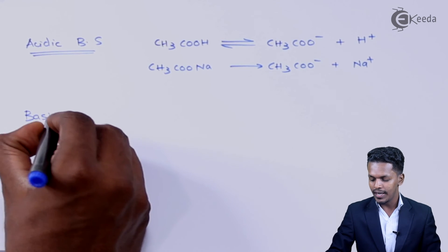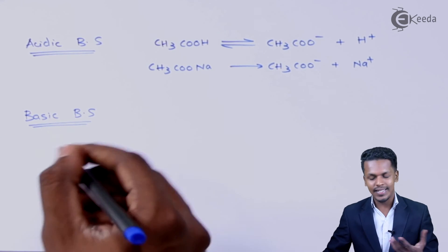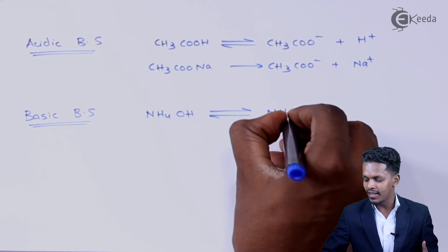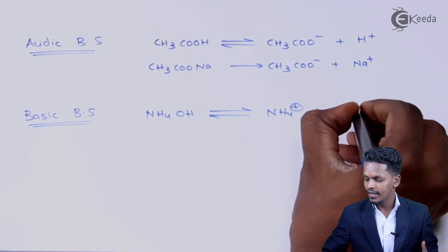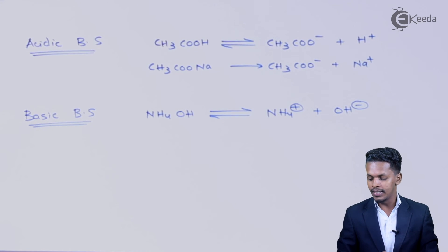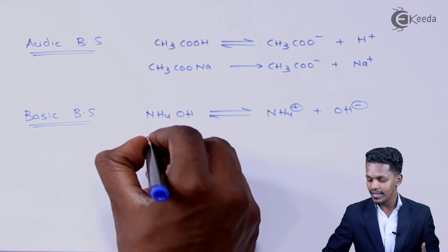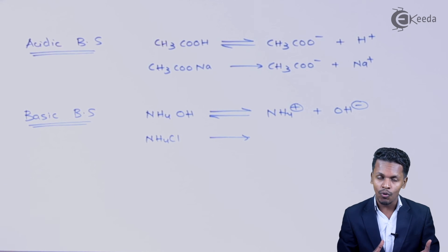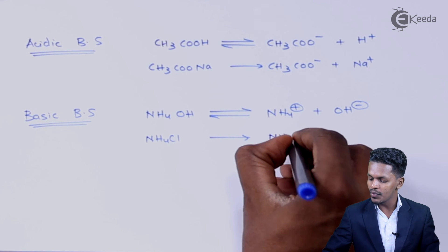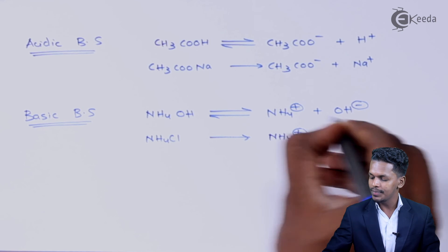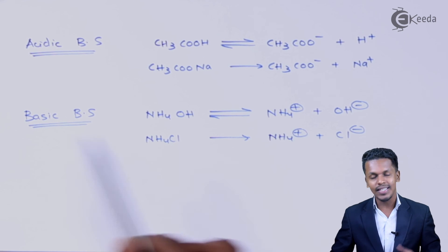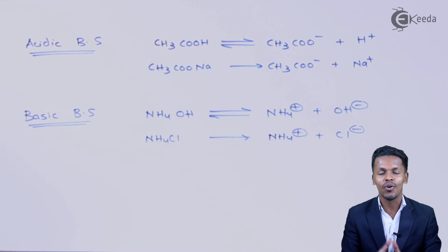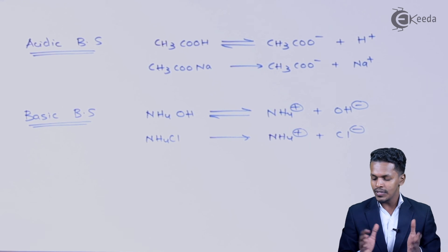For the basic buffer solution, we take NH4OH — a very weak base — so it won't dissociate completely and dissociation will be partial, shown by the equilibrium sign. We also take NH4Cl, which is a salt that is very much soluble in water and will dissociate completely, producing ammonium ion (NH4⁺) and Cl⁻ ion. This combination prevents the change in pH. The mechanism will be discussed in the next lecture on buffer solution mechanism.